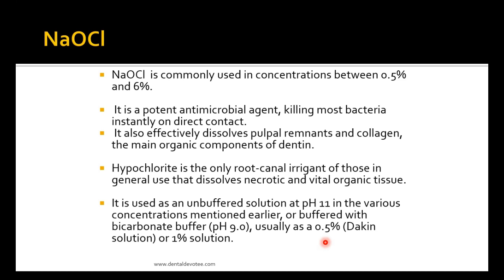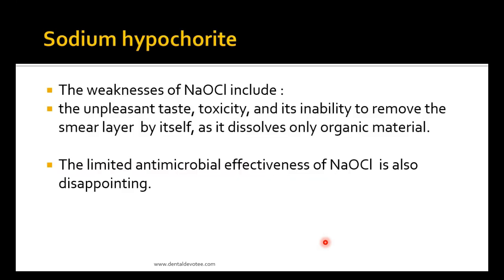Sodium hypochlorite is commonly used in concentrations between 0.5% and 6%. It is a potent antimicrobial agent, killing most bacteria instantly on direct contact. It also effectively dissolves pulpal remnants and collagen — the main organic components of dentine. Hypochlorite is the only root canal irrigant in general use that dissolves necrotic and vital organic tissue. It is used as an unbuffered solution at pH 11, or buffered with bicarbonate buffer at pH 9.0 (usually 0.5% or 1% solution), known as Dakin solution.